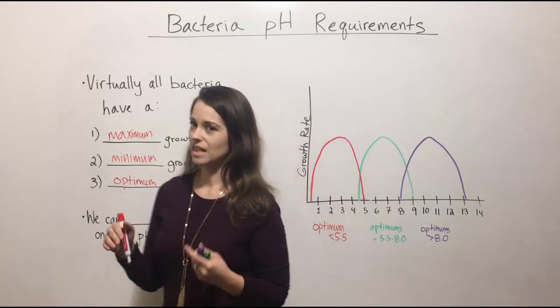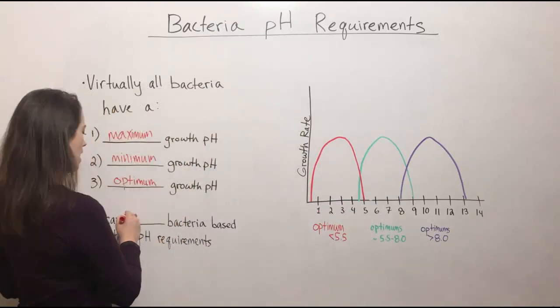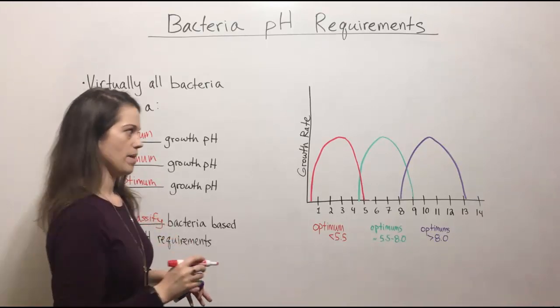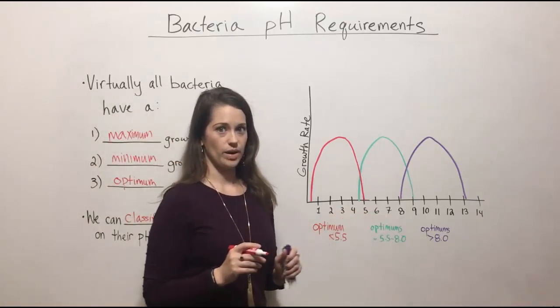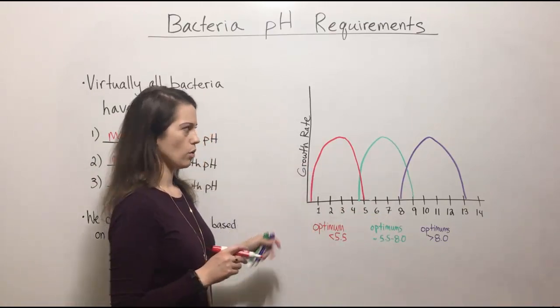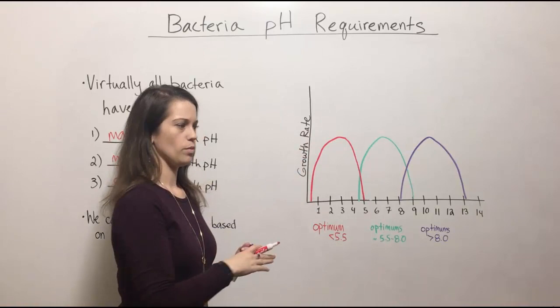We can actually classify bacteria based on these pH requirements and they fall into three main groups. So here on this graph on the y-axis we have the growth rate. Higher up will be the optimum growth.